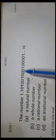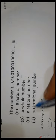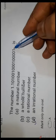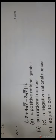Next question: the number 1.0... If you see the decimal representation of this number, that is an irrational number because the decimal representation is non-terminating and non-repeating. So D1 is the correct answer.